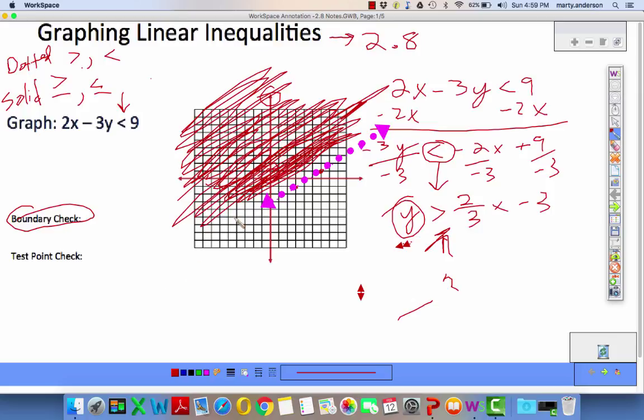Test point: I always use the origin whenever possible. Zero, zero should satisfy the equation. Is zero minus zero less than 9? Is zero less than 9? The answer is yes. The biggest thing that the test point does is make sure you've shaded in the correct spot. If you didn't recognize where we divided by a negative that you needed to flip the sign, that's where the mistake would show up.